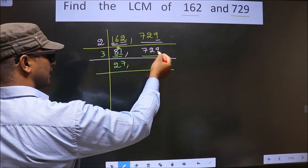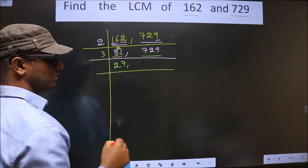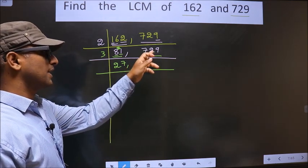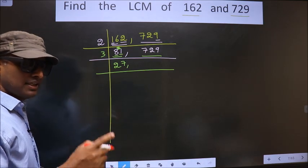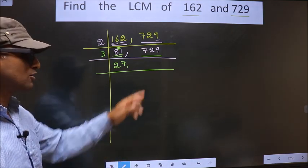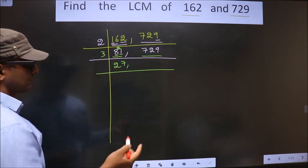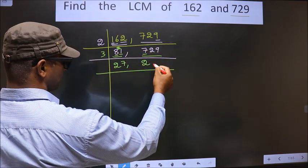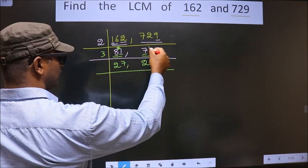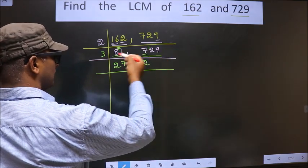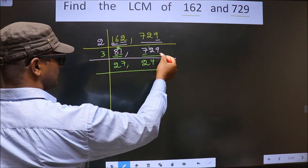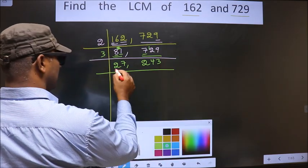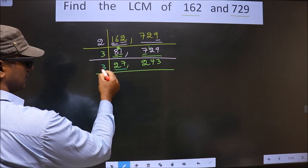Now, for the other number 729, to check whether it is divisible by 3, we add the digits: 7 plus 2 plus 9 gives us 18. Is 18 divisible by 3? Yes. So this number is also divisible by 3. The first number is 7. A number close to 7 in the 3 table is 6. 7 minus 6 is 1, carried forward making it 12. When do we get 12 in the 3 table? 3 fours are 12. Next number is 9; when do we get 9 in the 3 table? 3 threes are 9. Here we have 27, which is 3 nines.